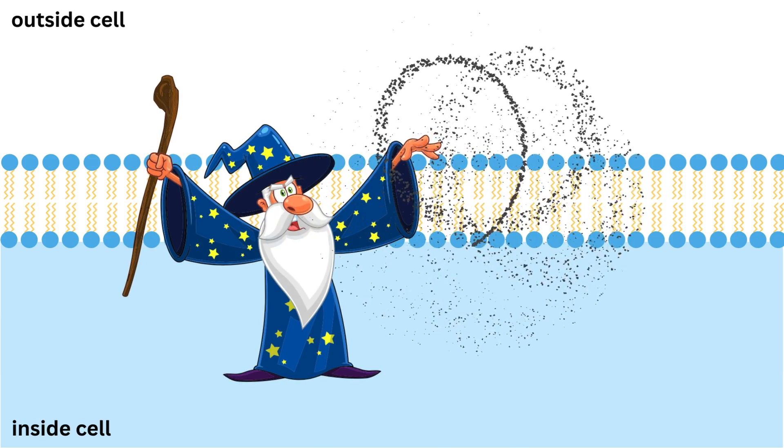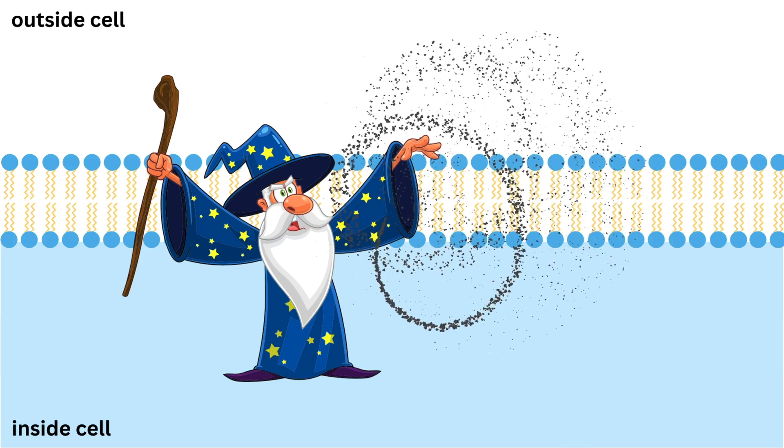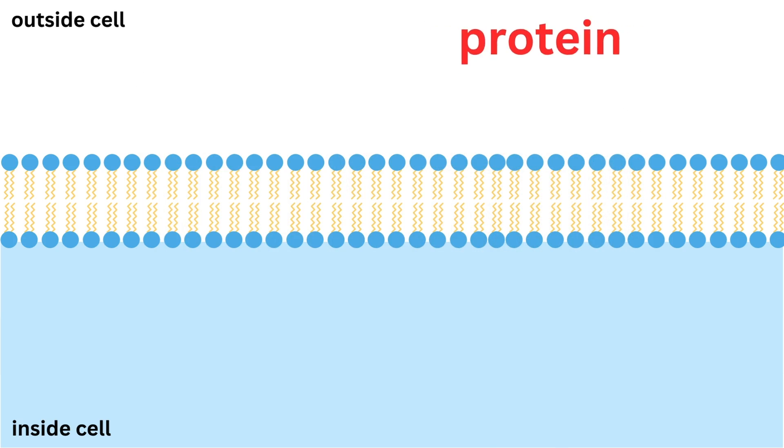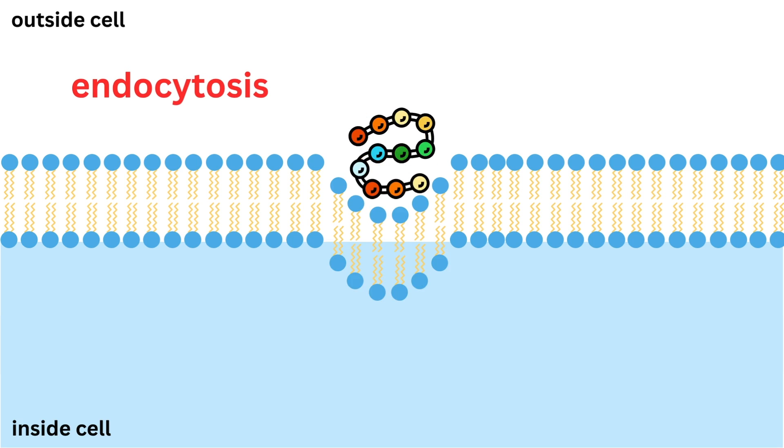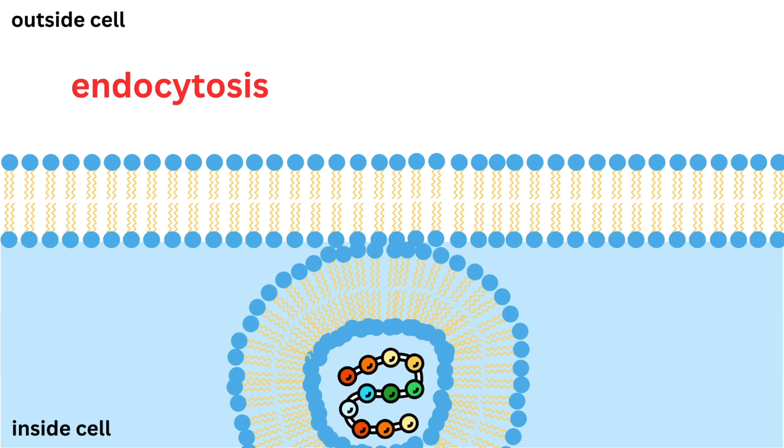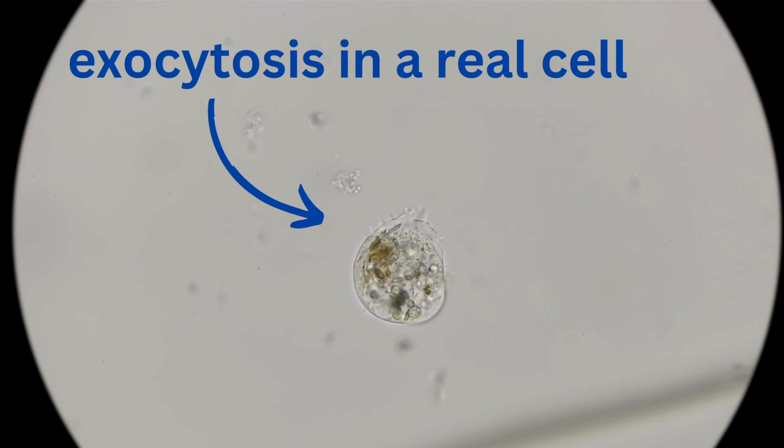The cell membrane also has some cool tricks for moving big stuff in and out. If the cell needs to bring in something large, like a big protein, it uses a process called endocytosis. The membrane wraps around the substance and pulls it into the cell. To get rid of something, like waste, the cell uses exocytosis, basically the reverse process, pushing the waste out.